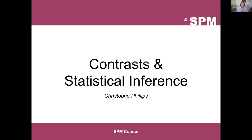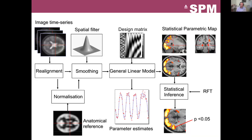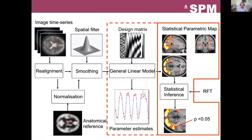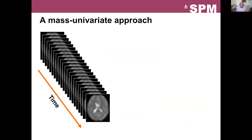This presentation is about contrasts and statistical inference. I'm starting right where Nadej presented the GLM. I'll be focusing on the right part of the pipeline that Guillaume introduced early on, except for the random field theory part. It's heavily linked to and relying on what Nadej just presented on the GLM. To summarize, what we're dealing with is the so-called mass univariate approach.